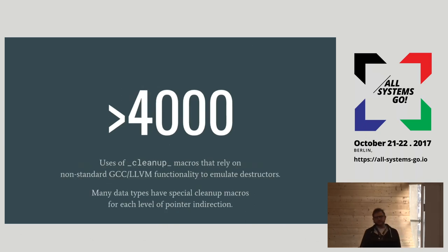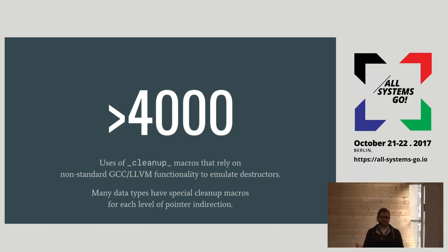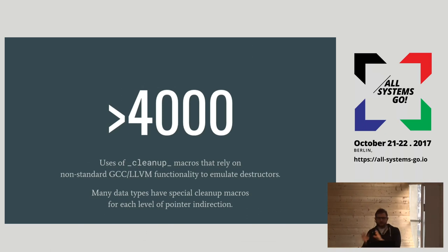We have over 4,000 instances of using cleanup macros in the code where we manually assign using GCC's extensions to C — this is actually non-standard C. The idea is running some sort of routine, almost like a destructor, to clean up memory once an object goes out of scope. On the upside, the object gets automatically cleaned up. On the downside, we have to have cleanup macros that are often type-specific, sometimes going several levels into their freeing operations. You have to use the appropriate cleanup macro for a particular data type because there's no implicit link between the two.